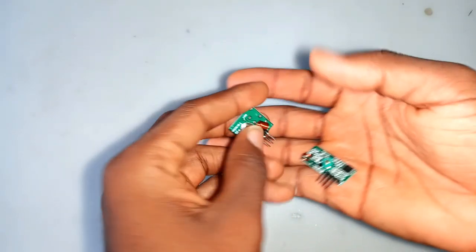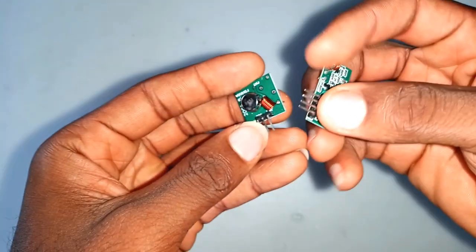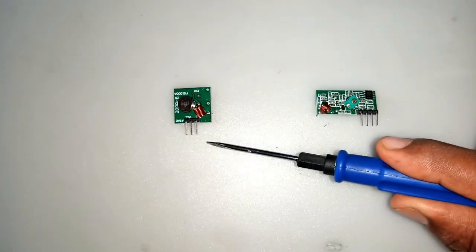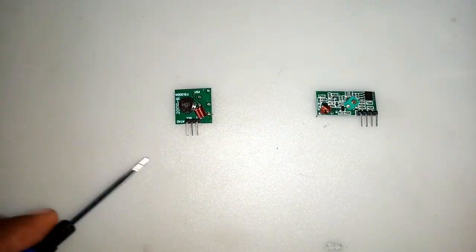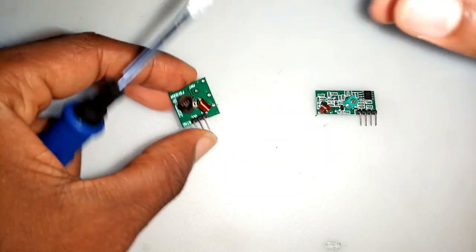Let's start this project by first looking at the RF module. This is a 433MHz RF module which has both the receiver board as well as the transmitter board.